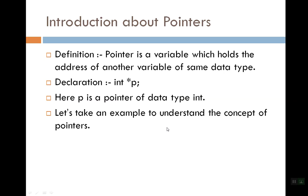The basic definition of pointers is that pointers are also a variable — a normal C variable. The difference is that the values of normal variables are data values, whereas a pointer keeps the address of any variable. It keeps the address of the normal variable, like int data type, and p is the name of the pointer variable, and it keeps the address.